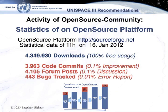The following diagram shows the ratio between free open usage of software and modifications. Statistical data from the open source platform sourceforge.net from 11 hours on 16 January 2012 recorded 4.4 million downloads — equivalent to free usage — around 4,000 code commits, which is 0.1% of improvement relative to downloads, 4,105 forum posts discussing further development, and 443 bug reports to be fixed by the open source community.